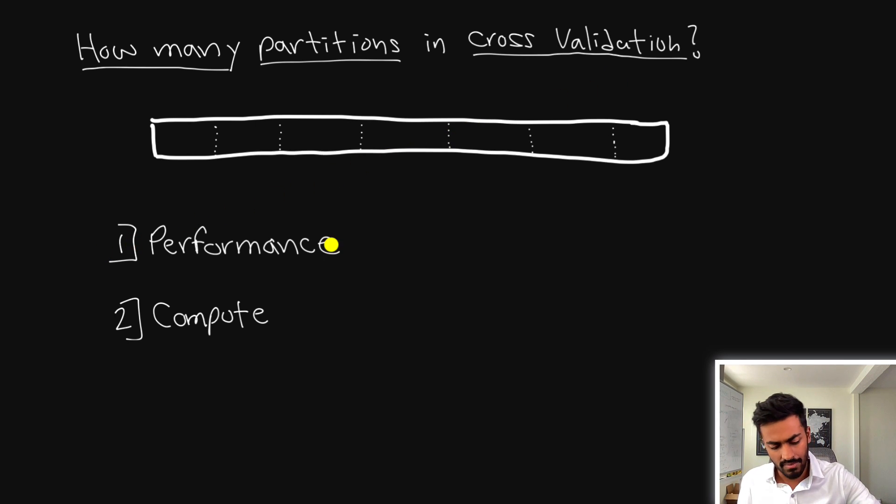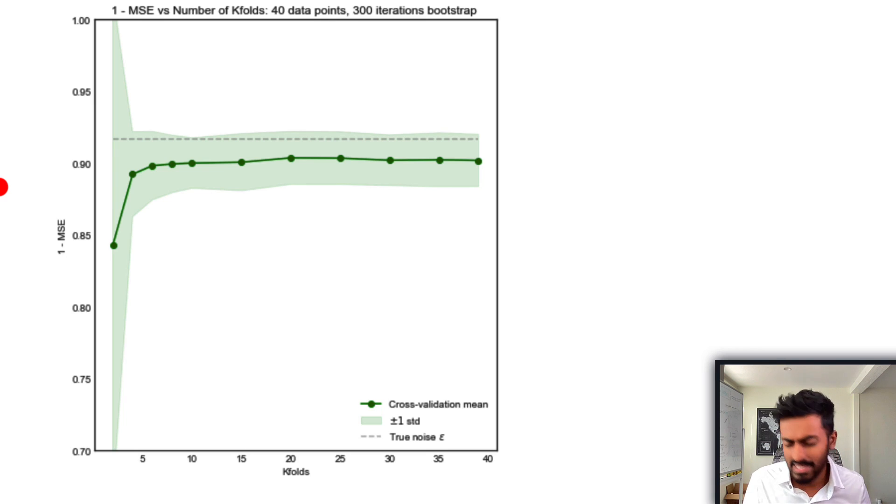Now in order to determine the number of partitions you might want to consider how well does this actually perform. And also what is the amount of compute that is required. And one of the best ways to get an idea of performance is through simulation. Let's say that we simulated some data and we have now 40 data points for which we want to perform some form of cross validation.